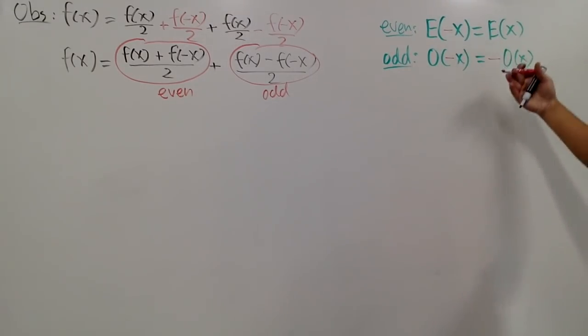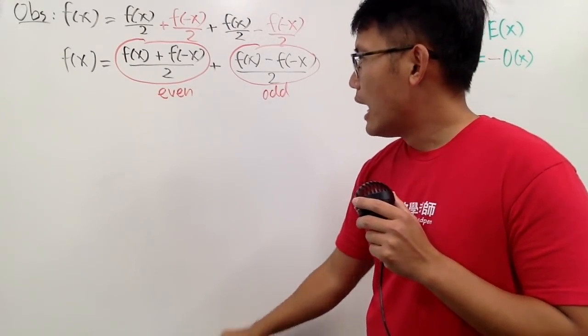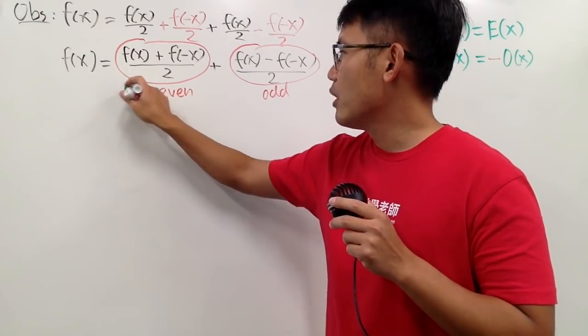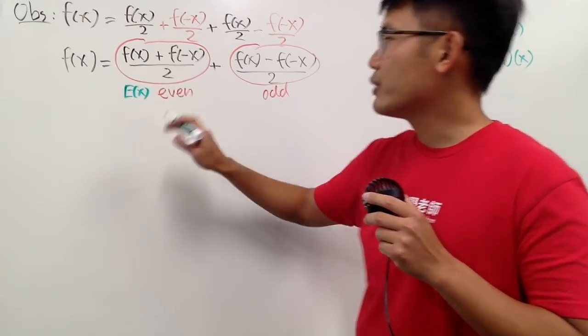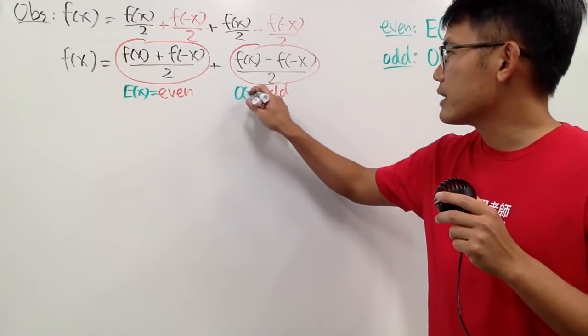Of course, here is the check. We are going to do the check right here. So I will call this part E of x, and I will show you that this is going to be even. And I will call this O of x.